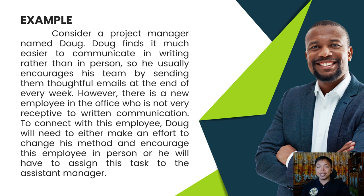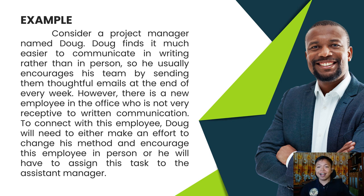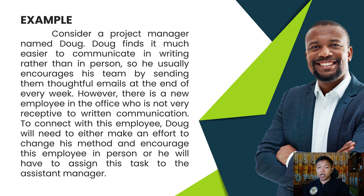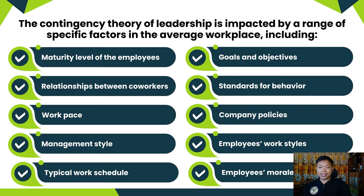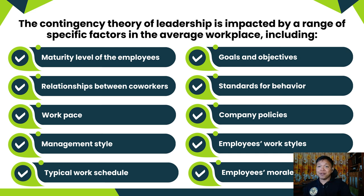In this case, Dog is not a persistently incompetent leader. He is a good leader who is facing an unexpected problem. If Dog realizes that he will need to adjust to his environment rather than trying to push his customary tactics, he may still be a very productive leader who effectively encourages his team. The contingency theory of leadership is impacted by a range of specific factors in the workplace, including the maturity level of employees — are they responsible enough or not?